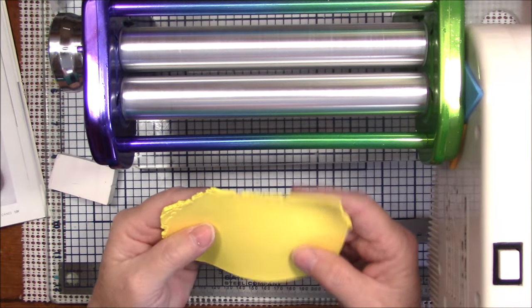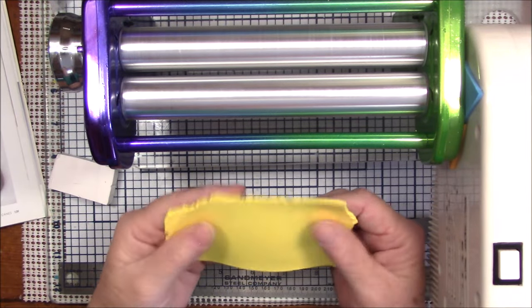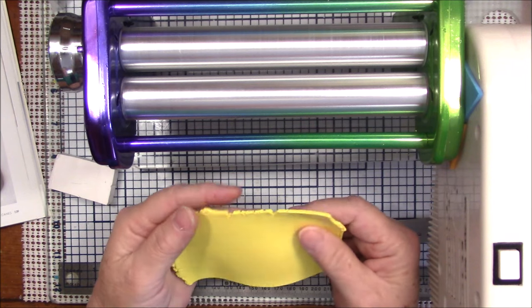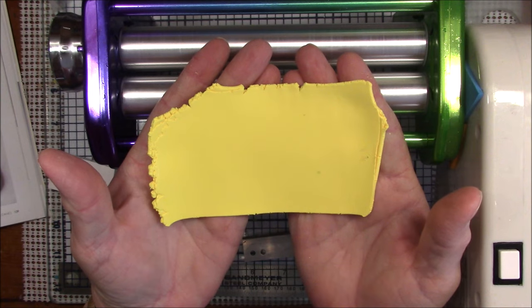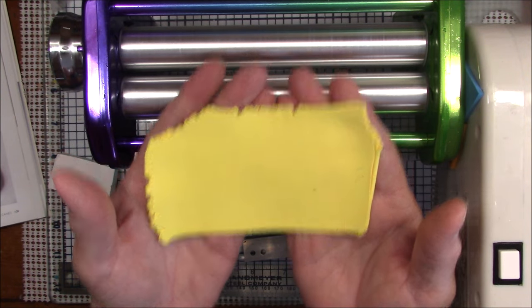Now I would probably run this through another maybe 10 times to get it fully blended, but you can see I've got a much more, it's closer to a rectangular shape now than it was before.